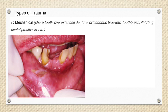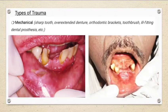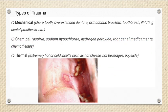Here you can see a very obvious impression of the sharp tooth, which is a very clear cause for the ulcer. Here it is also very obvious that the patient is missing anterior teeth, so the cause may be related to an ill-fitting or over-extended denture.